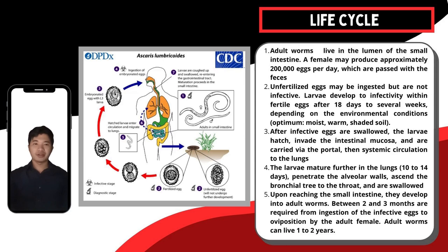Next, after the infective eggs are swallowed, the larvae hatch and invade the intestinal mucosa. From the intestinal mucosa, the parasite is carried by the systemic portal and consequently brought into the lungs. Within 10 to 14 days, the larvae mature further in the lungs, which allows them to penetrate the alveolar walls, ascending towards the bronchial tree until reaching the throat.